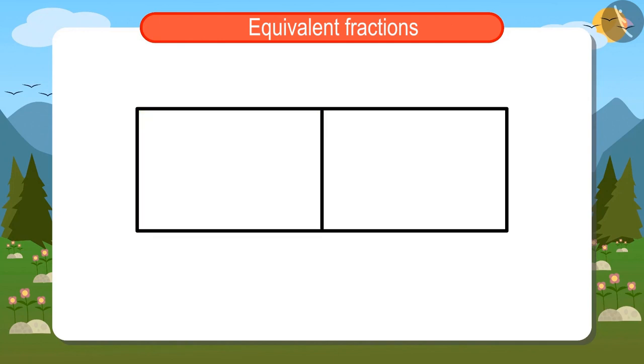Now in order to find the two fourths of this rectangle, first I will divide it into four equal parts. Now two of these four parts will be two fourths of this rectangle.